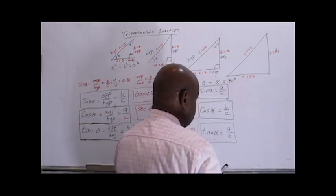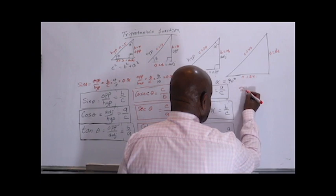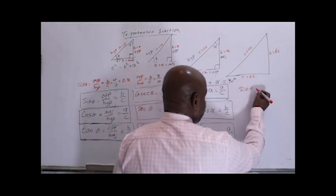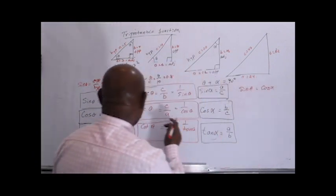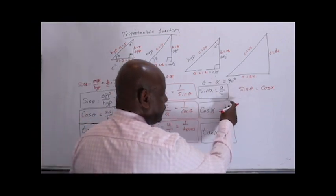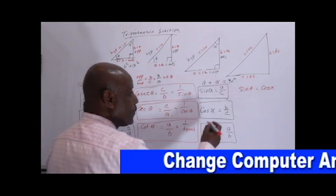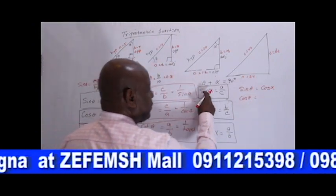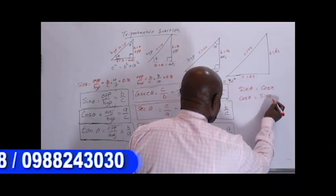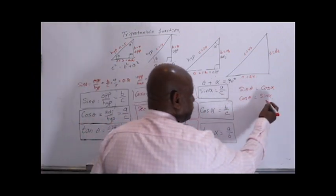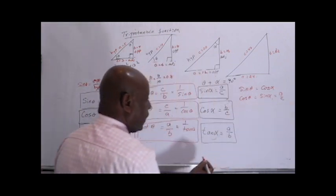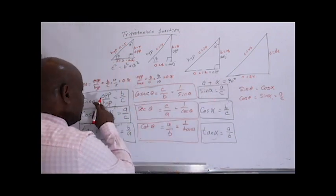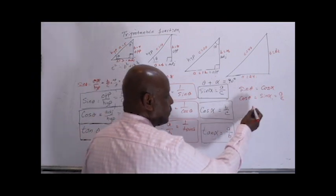Sin theta equals cos alpha — they are both B over C. And cos theta equals sin alpha — they are both A over C. So sin theta is B over C, and cos alpha is also B over C. They are the same.